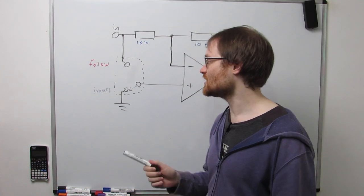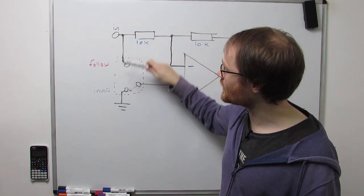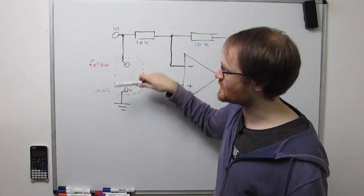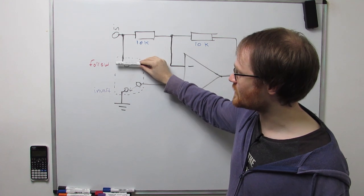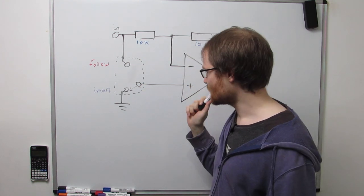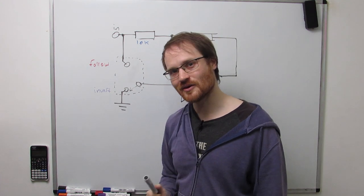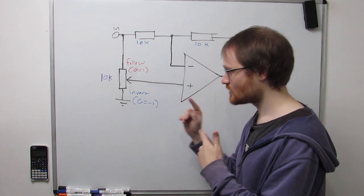So now what I want to show you is a really simple adjustment we can make to this circuit, that takes it from this binary in phase, out of phase, to a continuous, going from completely in phase, continuously, through to completely out of phase. And we can do that with one component.